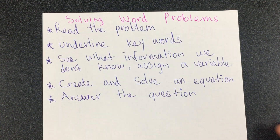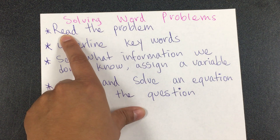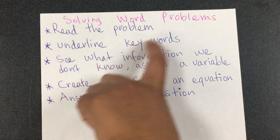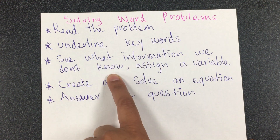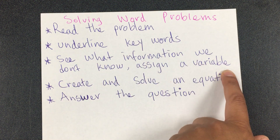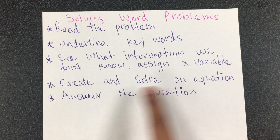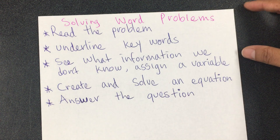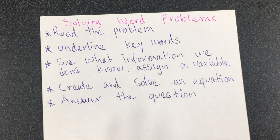These are some guidelines you have to follow when solving word problems. First, you have to read the problem. Then you underline keywords. Then you see what information we don't know and assign a variable to that. Then you create and solve an equation and answer the question. You might want to take a few minutes to copy that information.